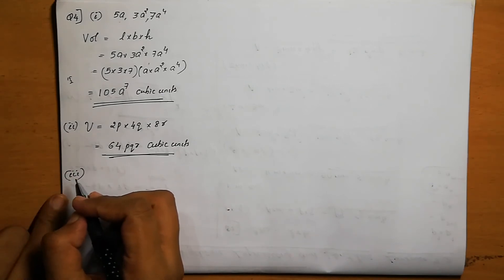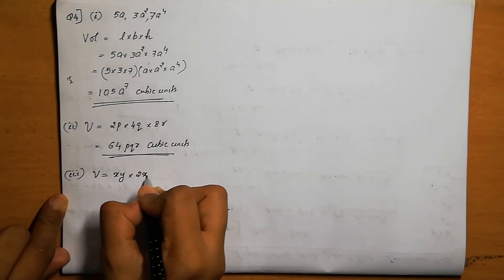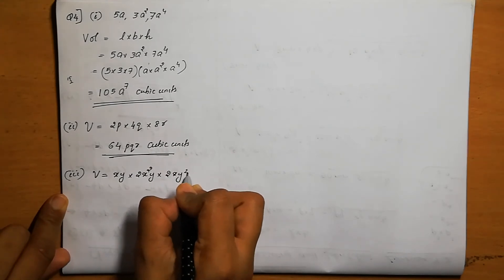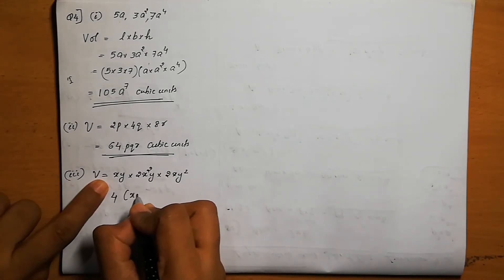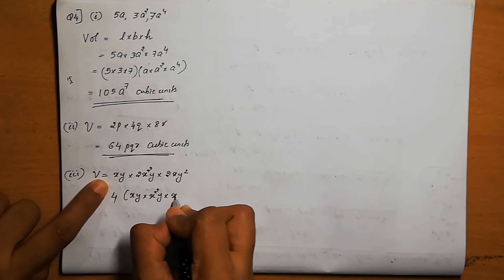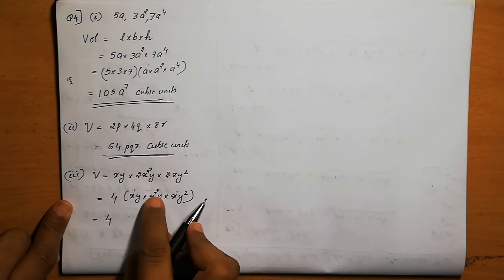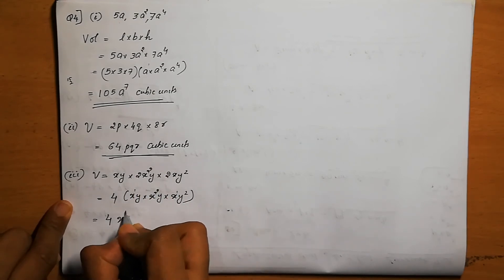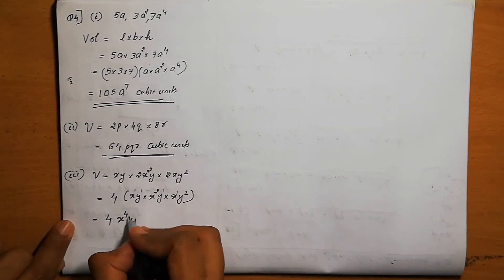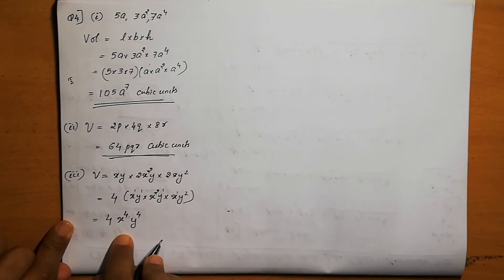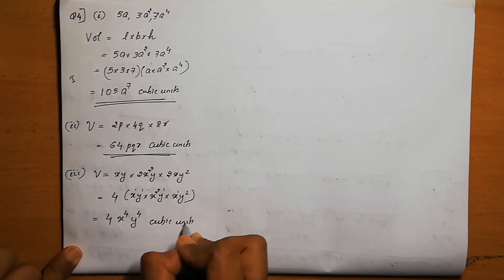Third one: xy, 2x square y, 2xy square. Volume is xy into 2x square y into 2xy square. Numbers: 2 into 2 is 4. Variables: x power 1, x power 2, x power 1 — powers add: 1 plus 2 plus 1 is 4, giving x power 4. y power 1, y power 1, y power 2 — powers add: 1 plus 1 plus 2 is 4, giving y power 4. So the volume is 4x power 4 y power 4 cubic units.